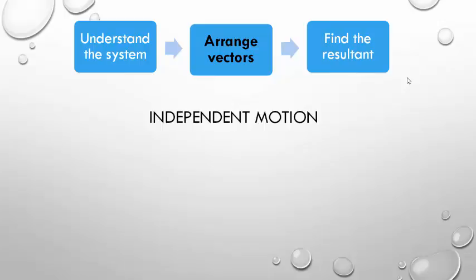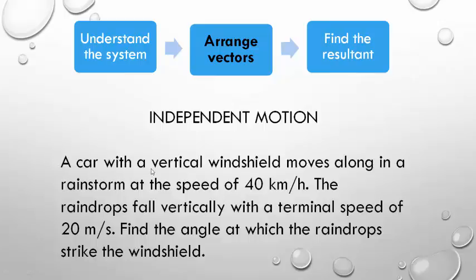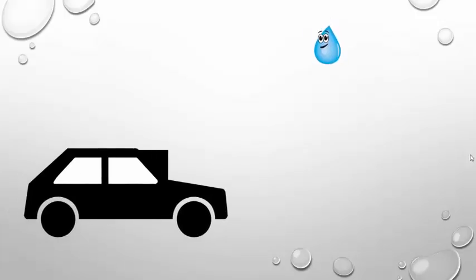First, we shall have a look at an example for independent motion. Consider this question: A car with vertical windshield moves along in a rain storm at the speed of 40 kilometers per hour. The raindrops fall vertically with a terminal speed of 20 meters per second. Find the angle at which the raindrops strike the windshield. Let us try to understand the system. The car with vertical windshield is moving towards the right, and the raindrop is falling vertically with a certain velocity. So when they both move together, the motion is something like this.